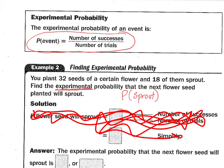You plant 32 seeds of a certain flower and 18 of them sprout. Find the what? Experimental. You've got to notice the words that they're writing in there. Experimental probability that the next flower seed planted will sprout. So we want to know the probability that it will sprout. The next one will sprout. Based on my experiment, how many of them sprouted? How many sprouted? Out of? Does that reduce? What does it reduce to? Nine over 16.